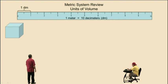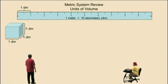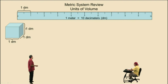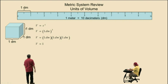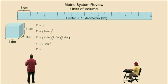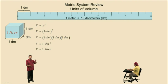Now let's look at volume. Say we have this cube with a side length of one decimeter — meaning its length, width, and height are all one decimeter. To calculate the volume of a cube, volume equals side length cubed. So we have one decimeter times one decimeter times one decimeter, giving us one cubic decimeter. Now, one cubic decimeter is equivalent to a volume of one liter — like a two-liter bottle of soda: half of that is one liter, which equals one cubic decimeter.